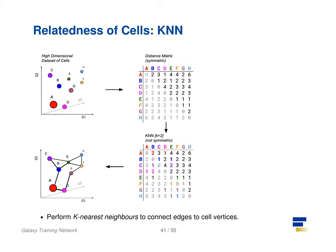Once a distance matrix is generated, we can perform K nearest neighbors upon it, where directed edges are generated between cells. For each row of the distance matrix, K of the cells with the smallest distance values are selected, representing the nearest neighbors that cell has to the selected column cells. If the edges are mutually shared between neighboring cells, then this is called a shared nearest neighbor approach.